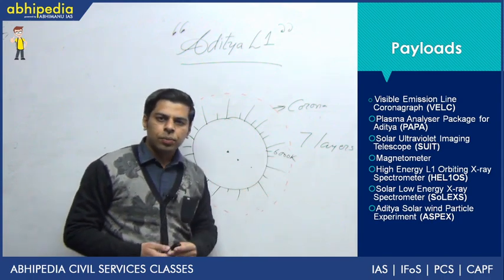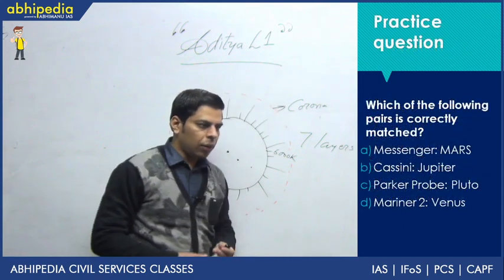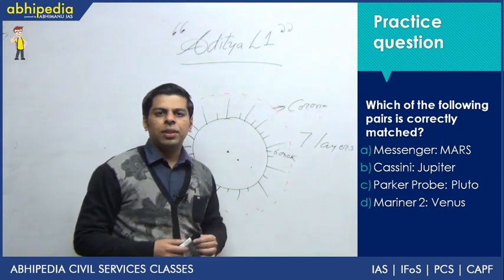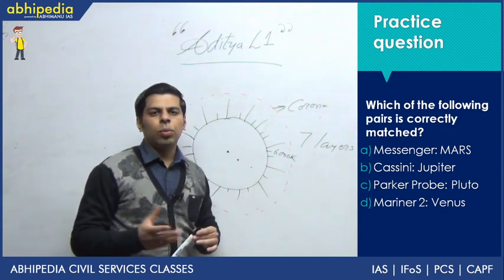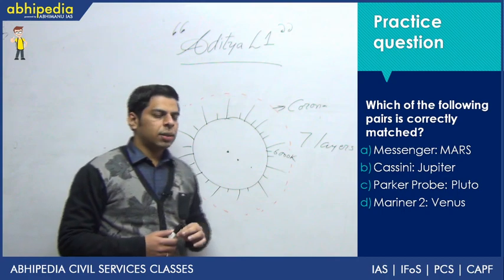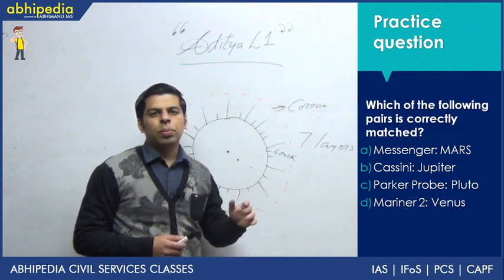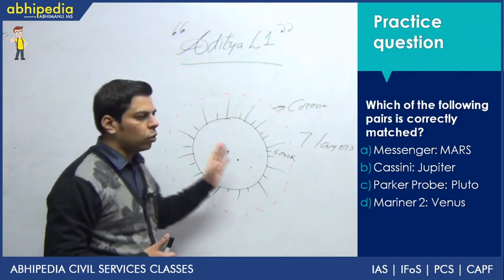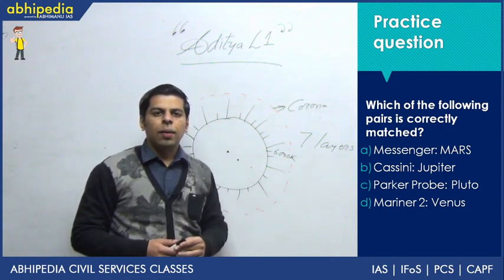Now like we always do, there is a practice question. It is not a tough one. Almost 4–5 years back there was a question when Mangalyaan was sent — an easy question where MOM stood for Mangalyaan, and Chandrayaan and Gaganyaan were other options. When Voyager escaped to the outer solar system, a match-the-following question was asked about Messenger and Voyager. I have framed a similar question where you have to pick the correct pair from a list of missions and their targets.